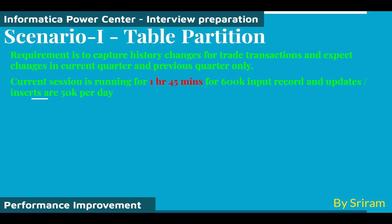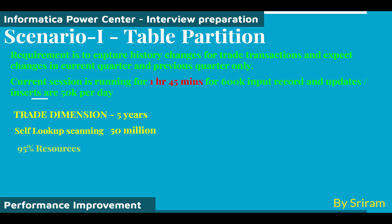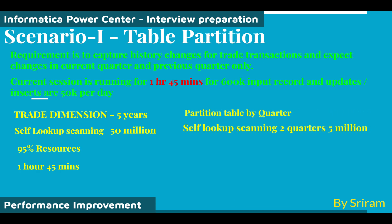This is a trade dimension table with five years of data — that is 50 million records. While caching these 50 million records, 95% of the session resources were used for caching, and it took one hour and 45 minutes to complete the session.